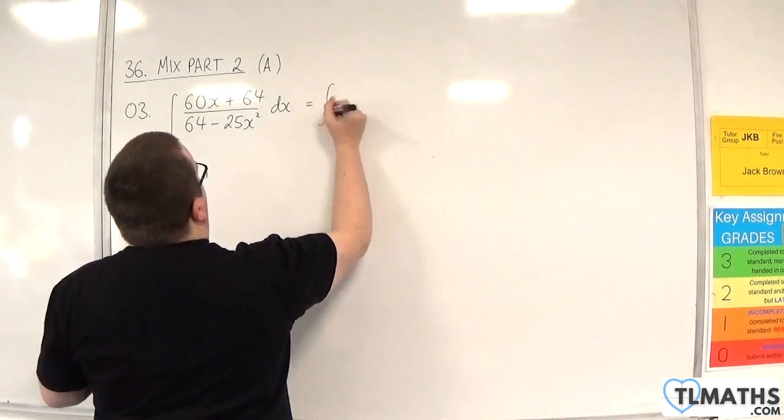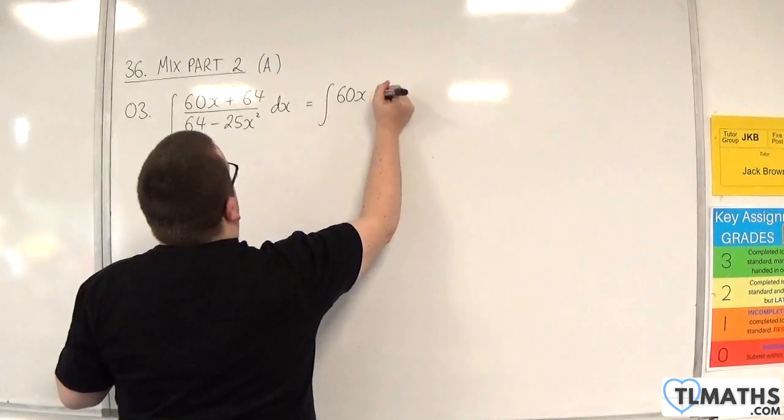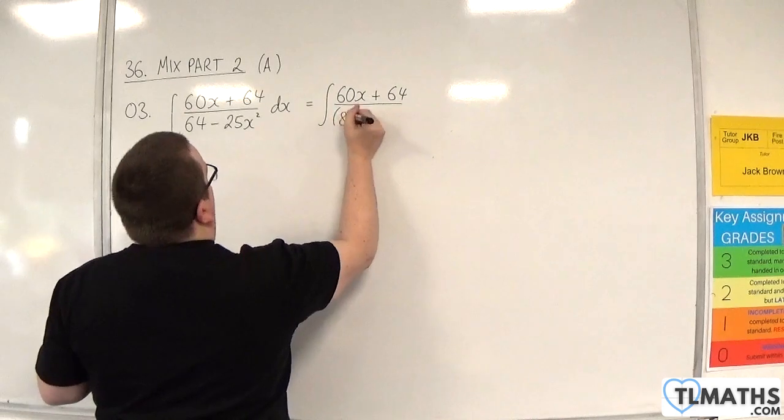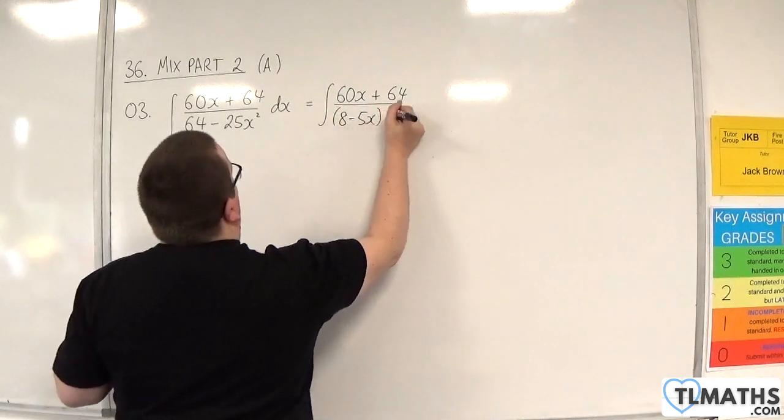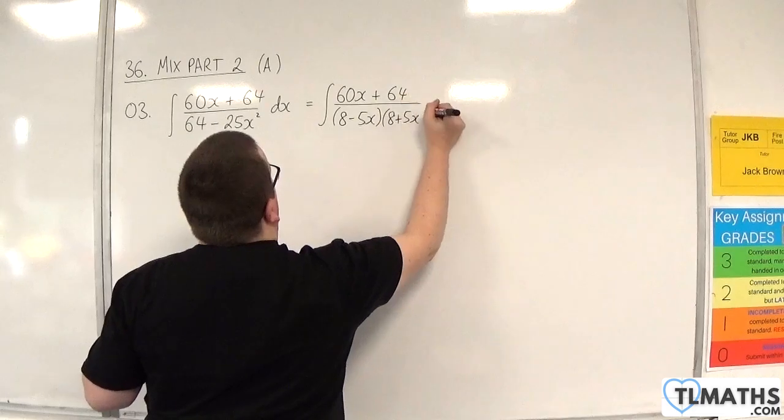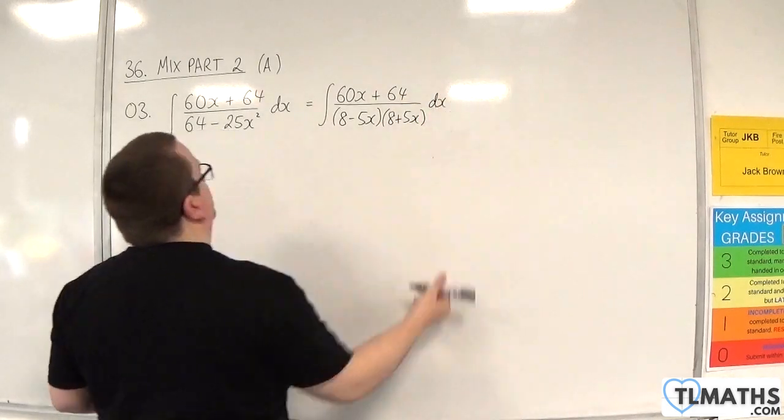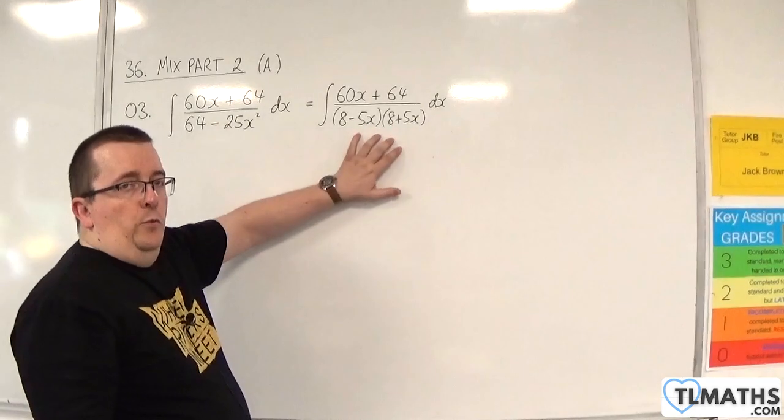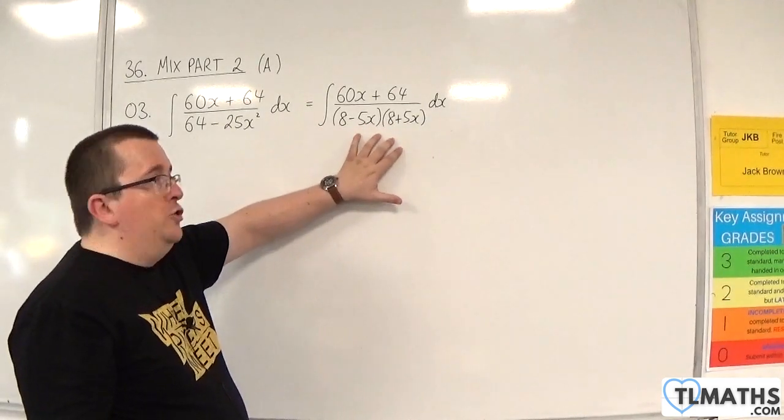So this is equal to the integral of 60x plus 64 over 8 take away 5x, 8 plus 5x dx. Now, that means that we should be able to split this up using partial fractions.